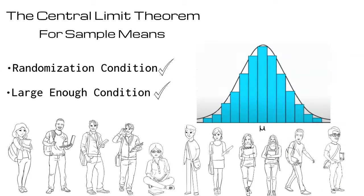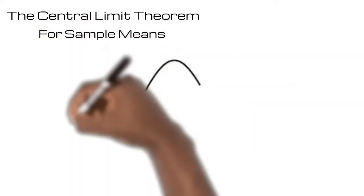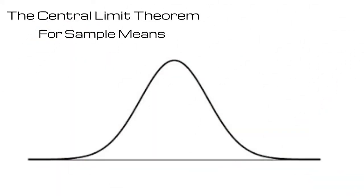Before we jump into an example, let's make sure we remember what the normal model looks like. In our normal model for the mean, the actual population mean will be at the center, and most of our sample means will lie within three standard deviations below this mean and three standard deviations above this mean.